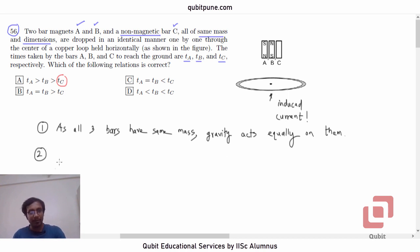Number two. The opposition will be experienced only by the magnets. Why only magnets? Because magnets will cause an induced current in the loop here. And the direction of that induced current will be such that its own polarity will try to oppose the relative motion.